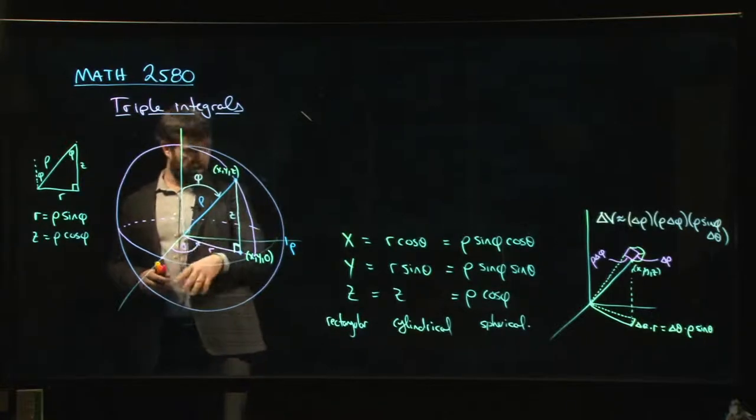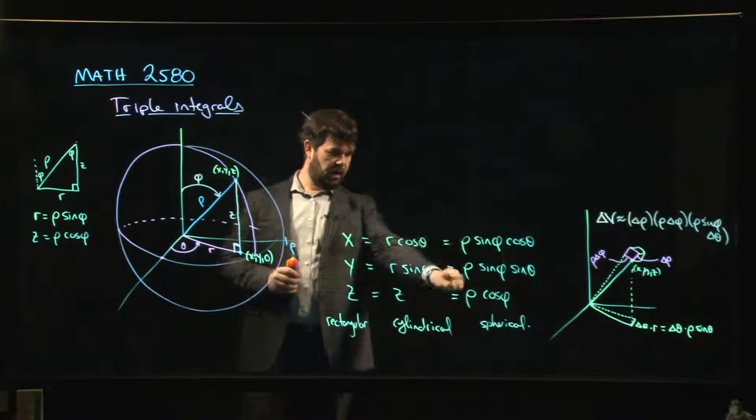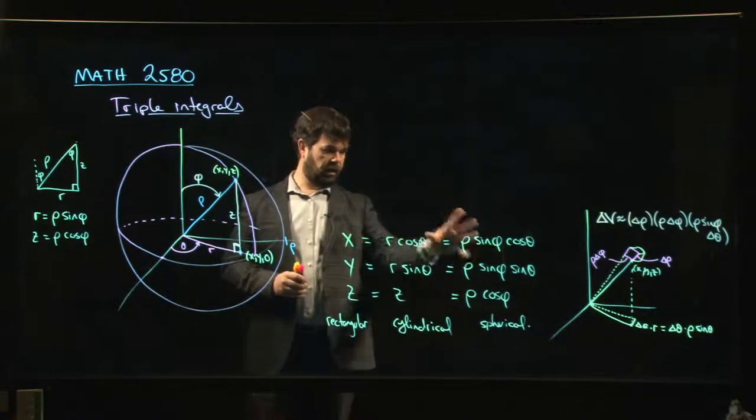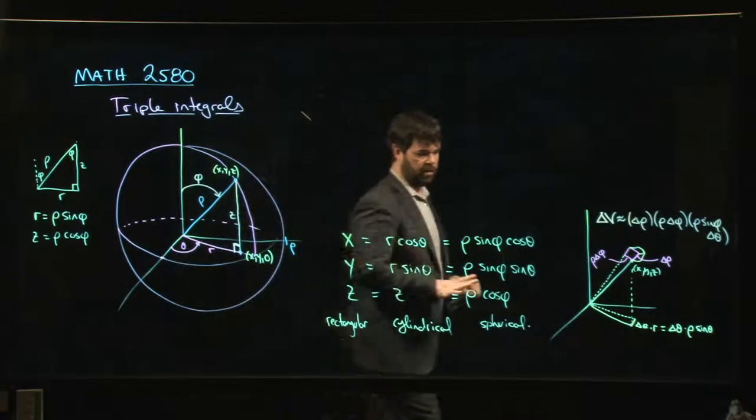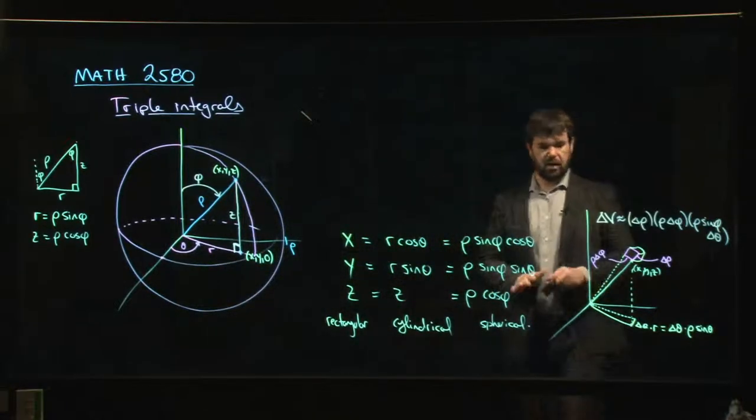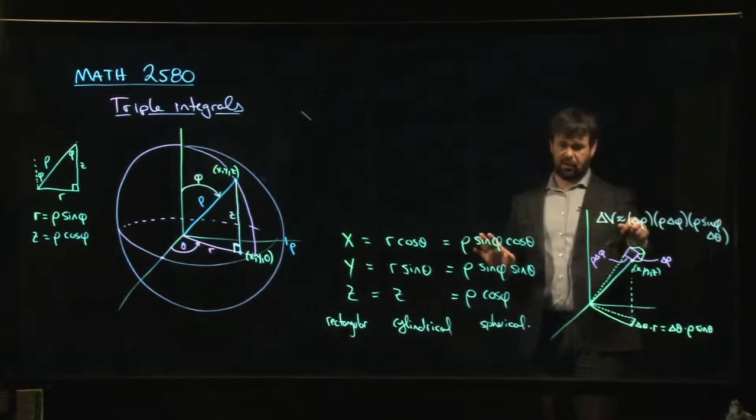We worked out the relationship between x, y, z and rho, phi, and theta. That's sitting here. And here's an attempt at explaining where the volume element comes from. Okay, you'll find a picture in the textbook that does a little bit better job than what I'm managing here.